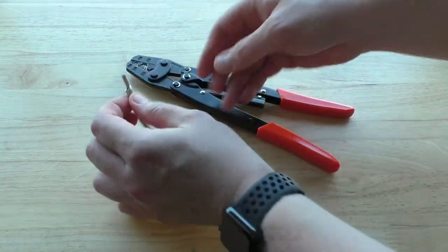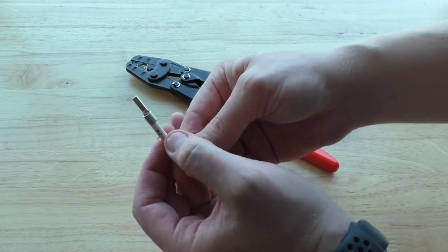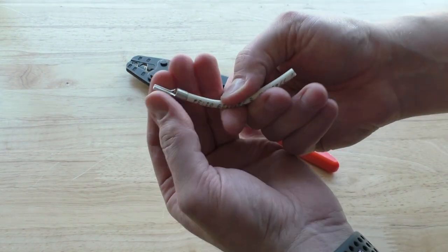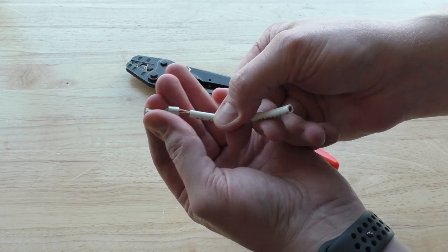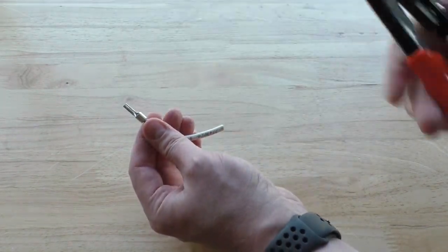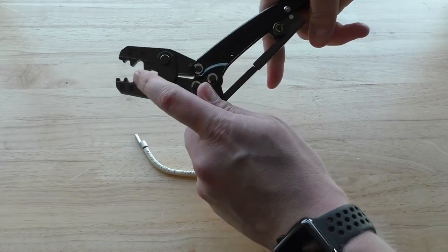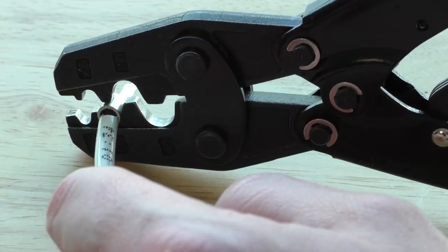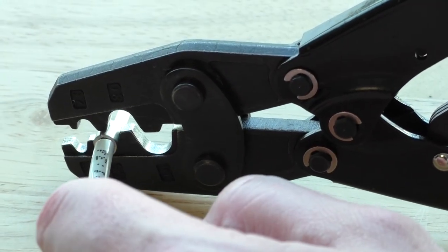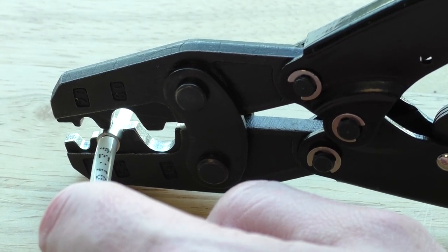Next we have our PTMB 10-12 8-gauge non-insulated pin terminal. Put that over some 8-gauge wire there, going to go ahead and load that into the appropriate slot. Get it nice and secure in there and then just give the handle a squeeze.